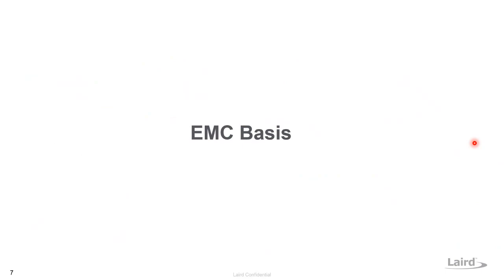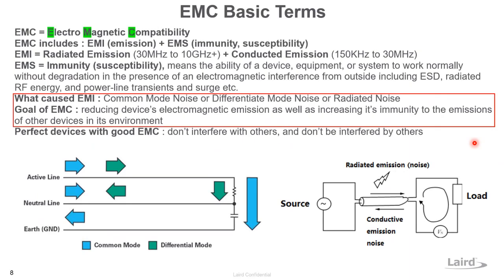EMC stands for electromagnetic compatibility. The key question is: what causes EMI problems? The sources of EMI are common mode noise, differential mode noise, and radiated noise. The goal of EMC is to reduce a device's electromagnetic emission as well as increase its immunity to emissions from other devices in the environment.